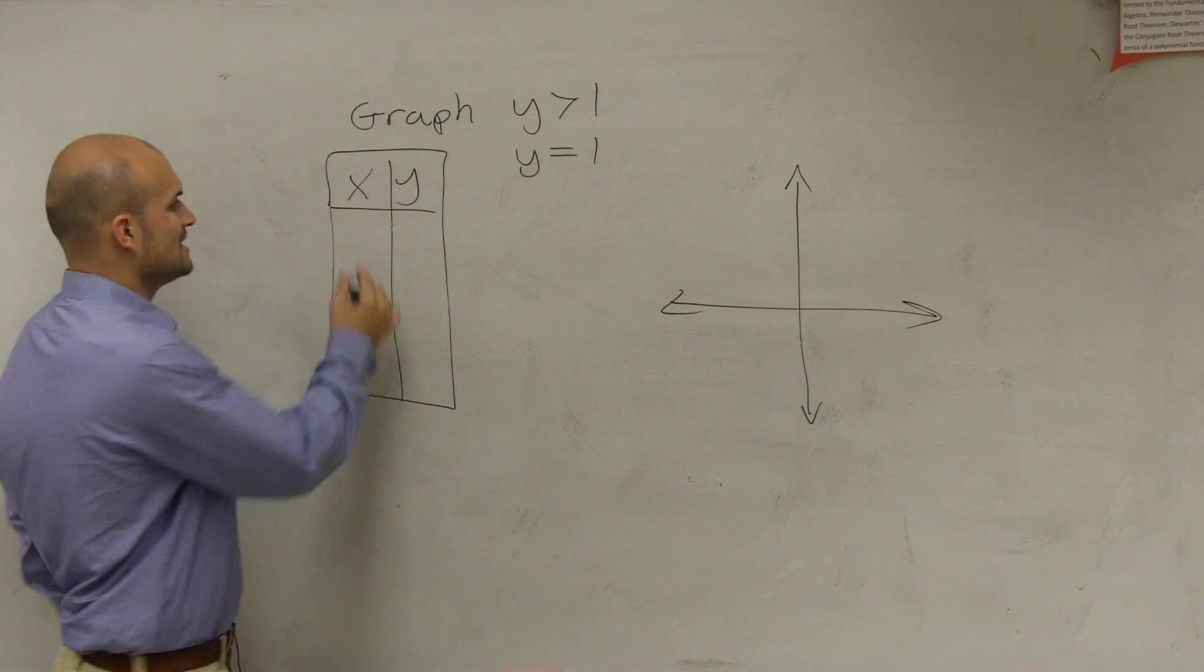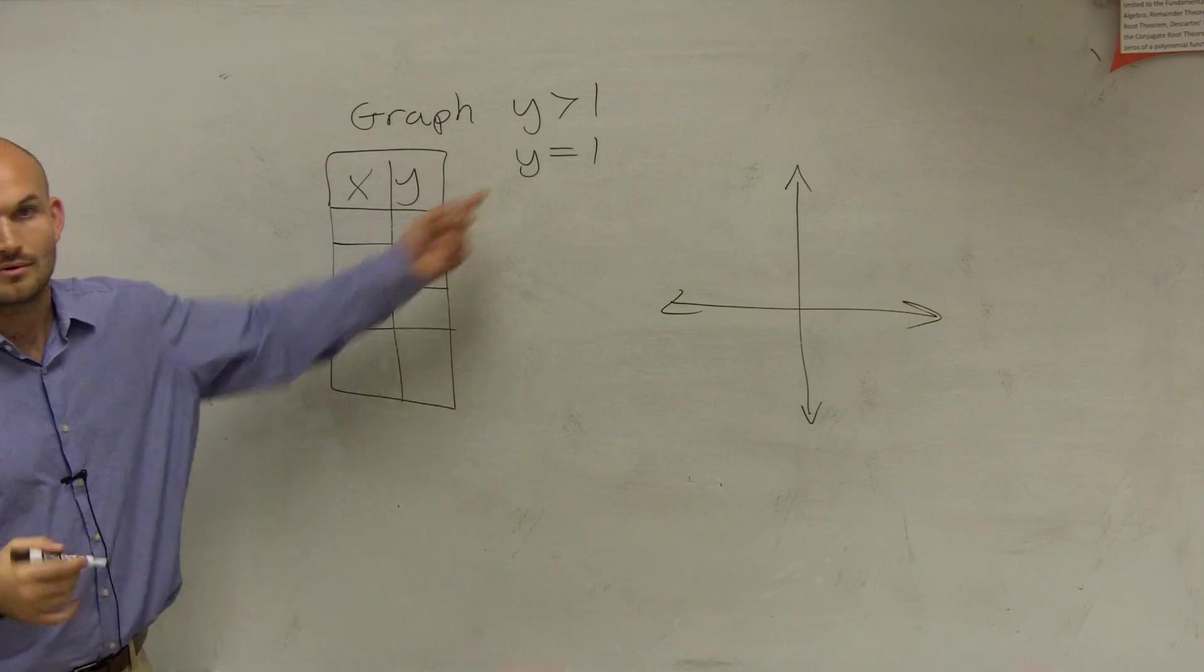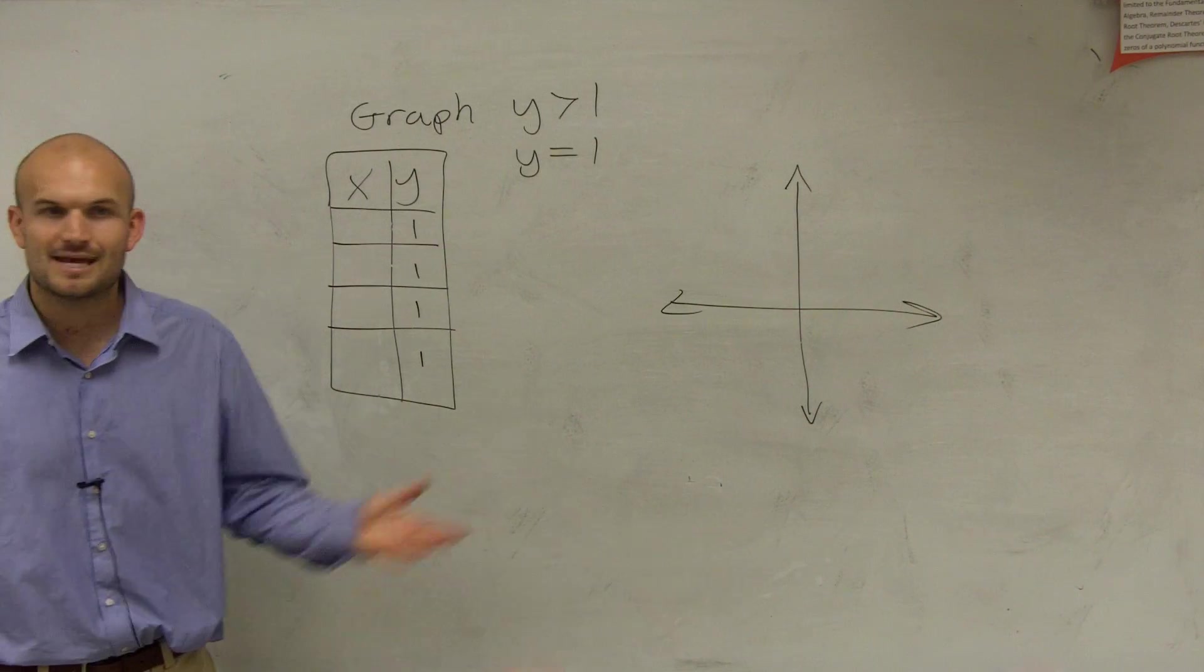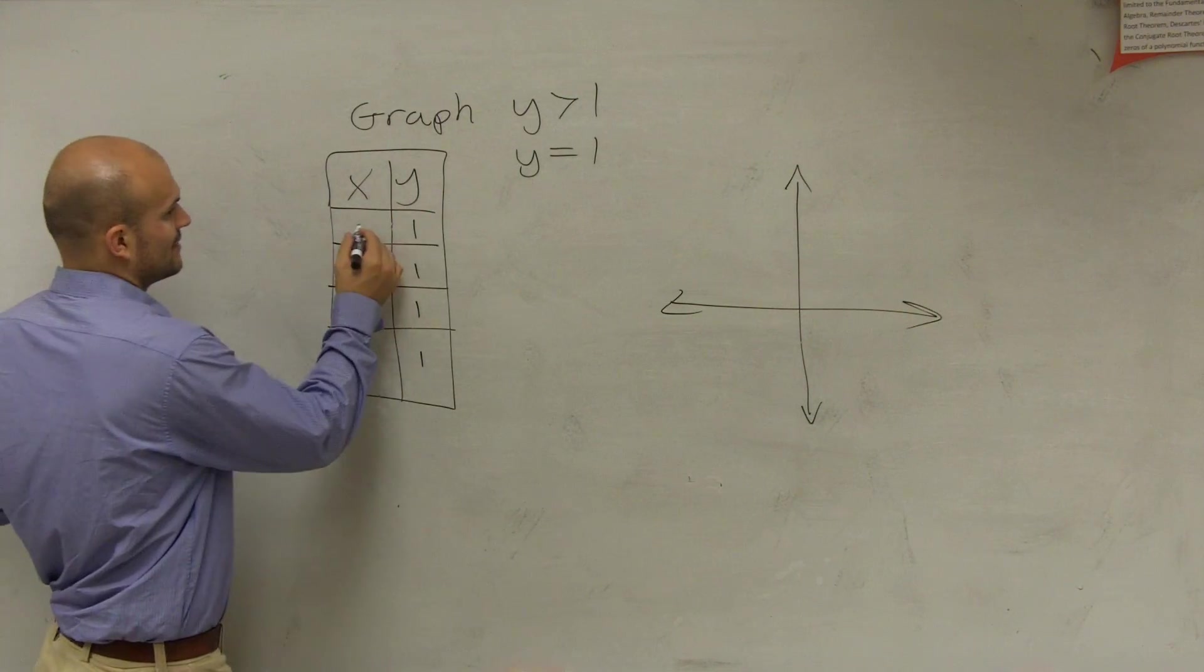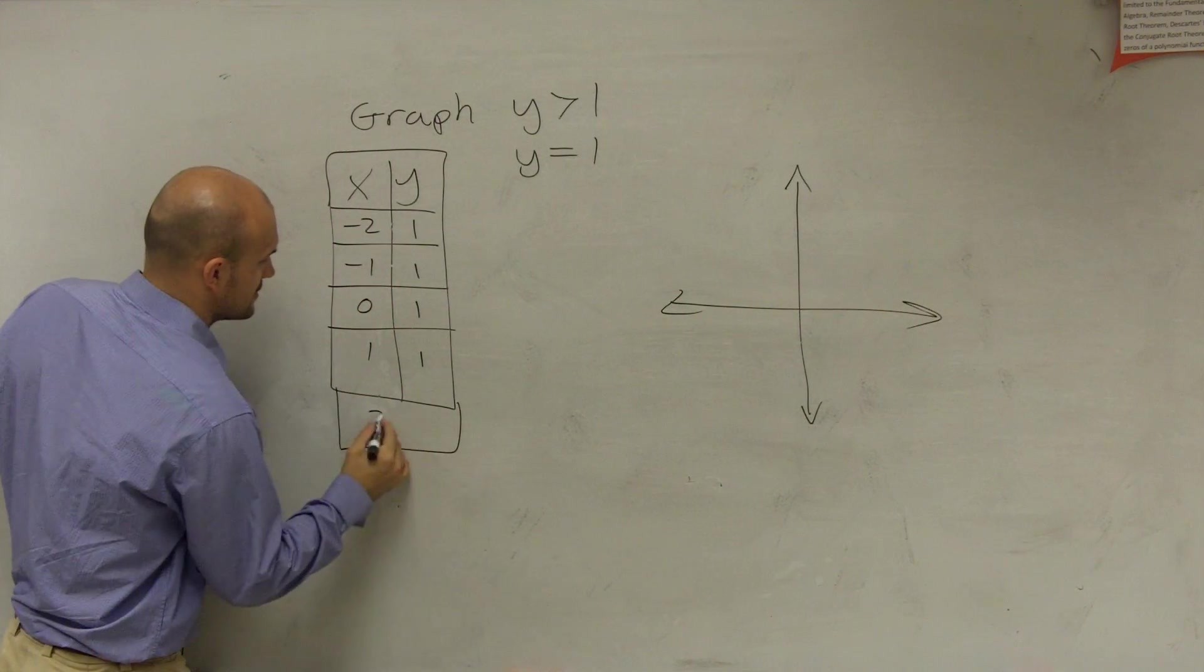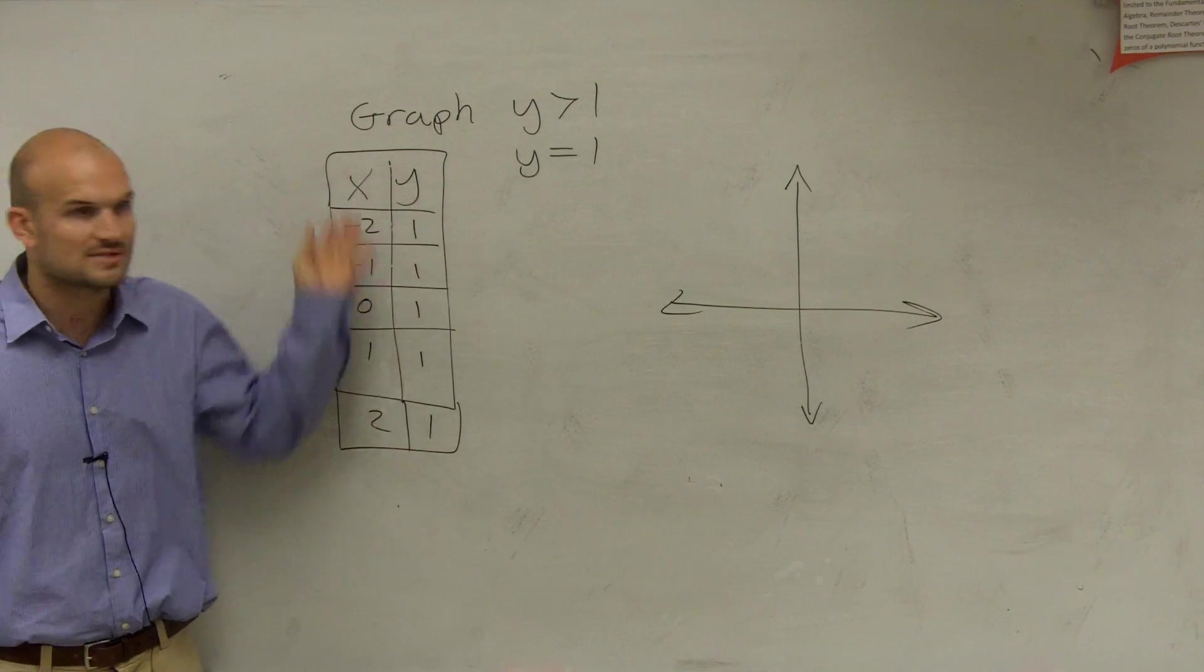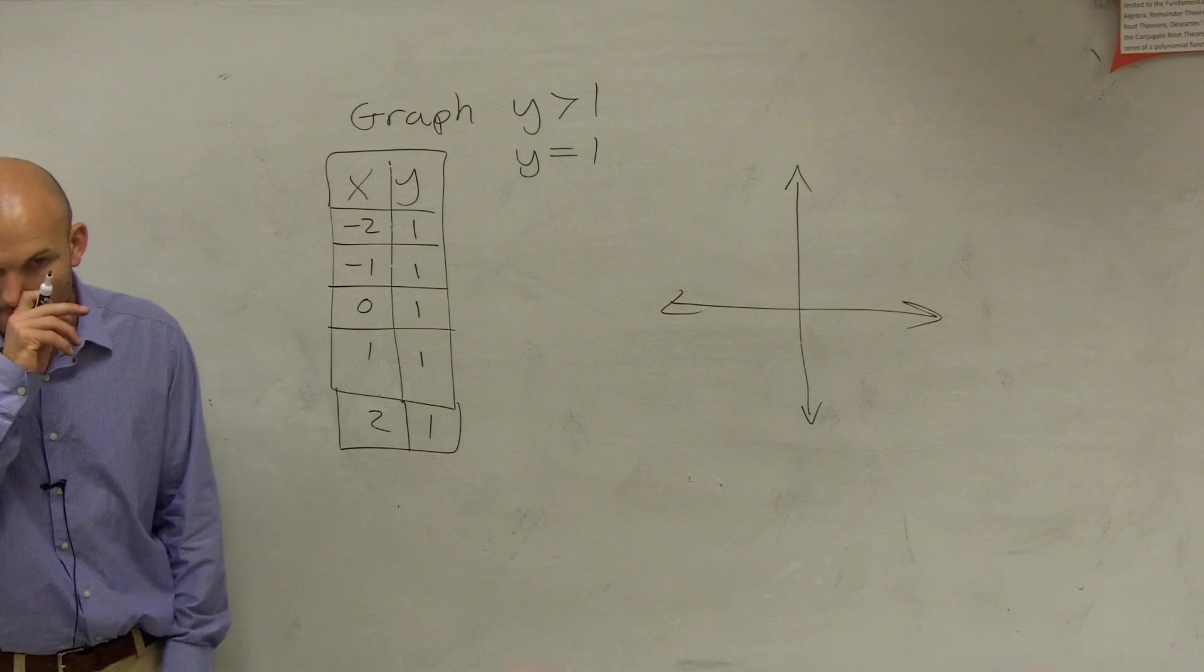Because it's very easy to understand what does y always equal? 1. Well, what do we do on a table of values? We pick values for x, right? We usually say like negative 2, negative 1, 0, 1, 2. Well, y always equals 1. So it doesn't matter what values I pick, but y is always going to equal 1.